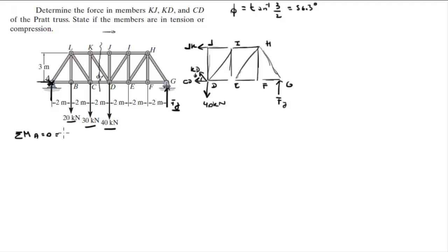So the 20 kN force creates a moment of 20 kN times 2 plus the 30 times 4 plus the 40 times 6 and the Fy minus the Fy because it's going the opposite way as the other 3, unless we are assuming that clockwise is positive. So it's minus Fy times 12, which is the whole length of the truss.